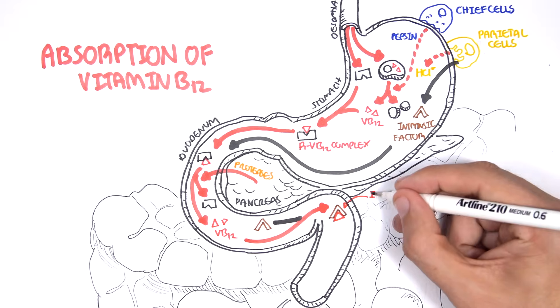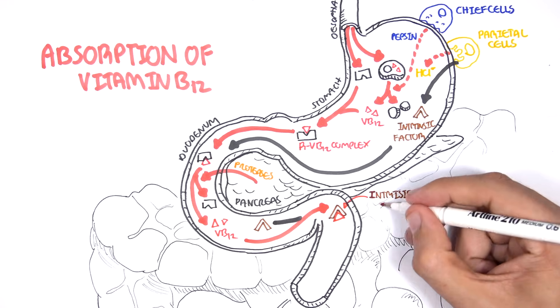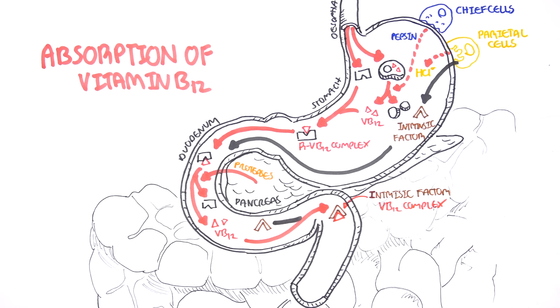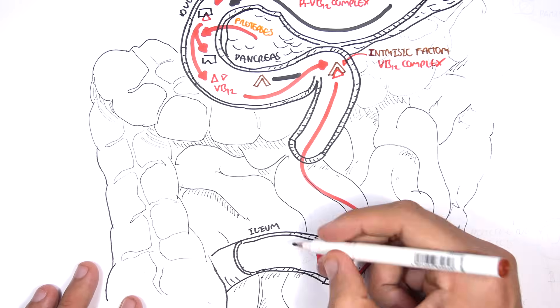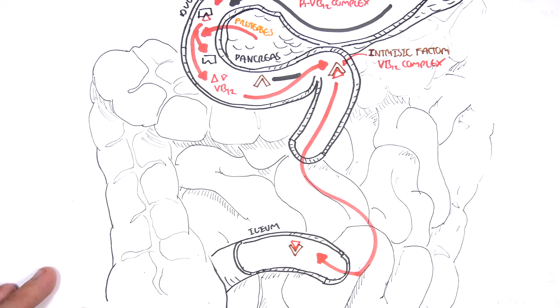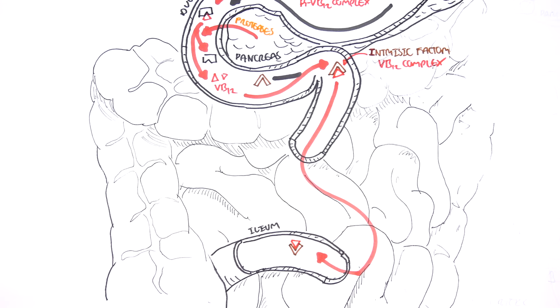This complex then will travel through the small intestine towards the end of the small intestine, the ileum. Now, within the ileum, there are receptors for intrinsic factor.